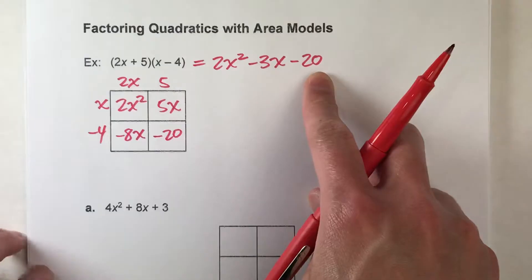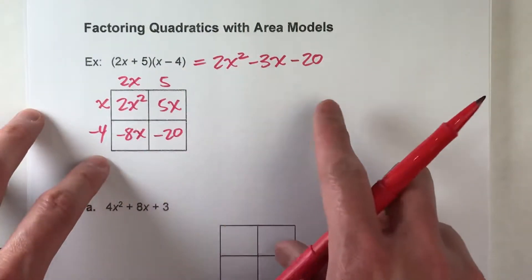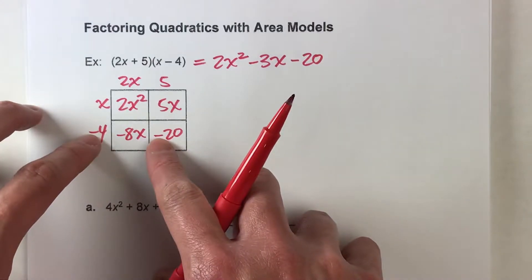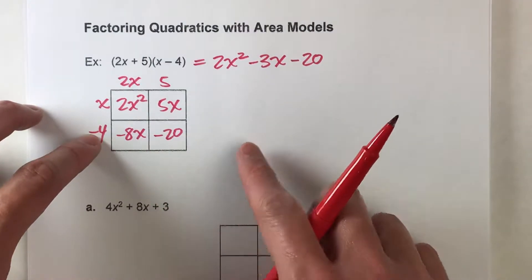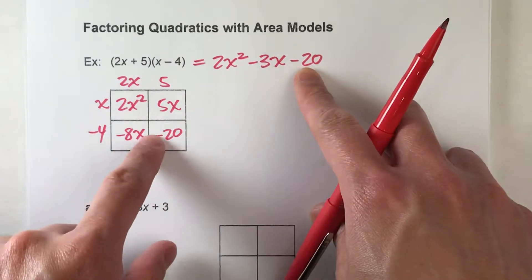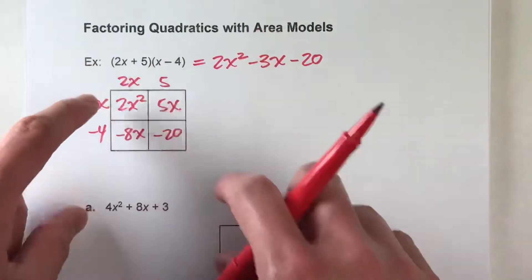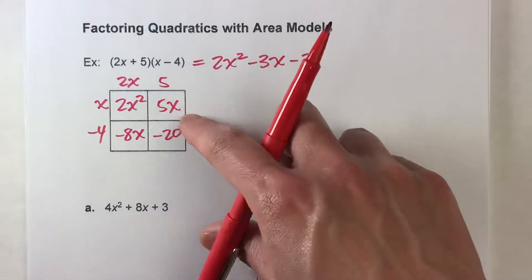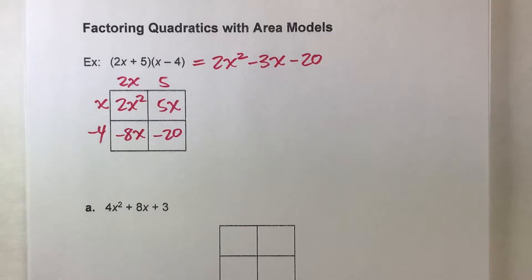2x squared minus 3x minus 20. Now, the reason why I showed you this in reverse is to make sure you understand where all this is coming from because here's what I'm going to show you today. We're going to start with the standard form and we're going to use this area model to figure out what the factored form of the equation is. And we're going to be working backwards, but we really have to understand how that area model works first.